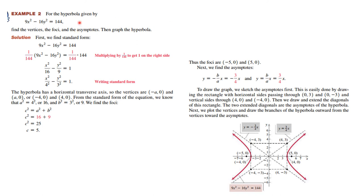Here's another example. So we have a hyperbola given by this equation here to find the vertices, the foci, and the asymptotes, and then graph the hyperbola. Well, this is not in standard form because we need to have a 1 here to have it in standard form. So we divide all the way through by 144. And when we do those calculations, we get this in standard form. And if we realize that 16 is 4 squared and 9 is 3 squared, we can write it this way in standard form.